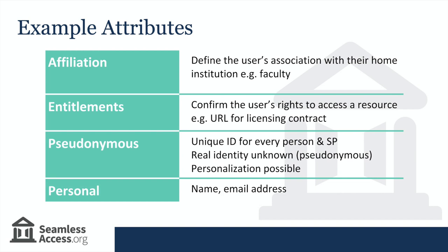Entitlement attributes confirm the user's right to access a given resource based on criteria previously agreed with the service provider — for example, providing a URL for the licensing contract with the service provider. A pseudonymous identifier can be shared that is unique to each person and for each service provider, so it masks their true identity, but it does enable that user to be identified by the same service provider the next time they visit, but can't be used to build a pattern of usage across service providers.